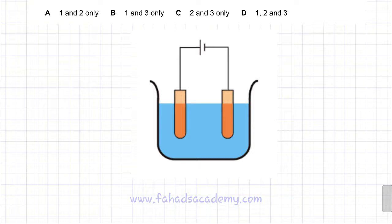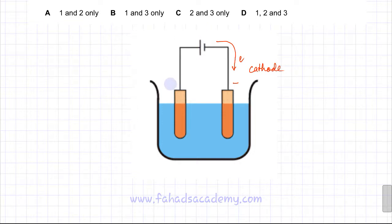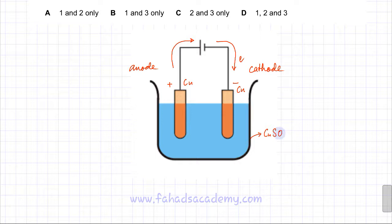Here is the electrolysis diagram. On the left side is the cathode — the negative terminal — where electrons are provided by the battery. On the right side is the positive terminal, also called the anode, where the battery gains electrons. Both electrodes are made from copper metal. The solution contains aqueous copper sulfate, CuSO₄(aq).